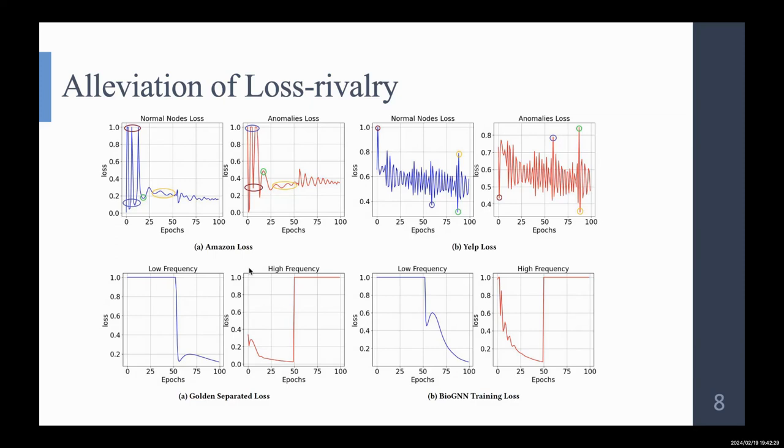And in the right bottom, it's the true loss curve because the label of test nodes cannot be accessed. So the prediction error of NLD will affect our model's performance. But it's clear that the problem of loss rivalry is alleviated.